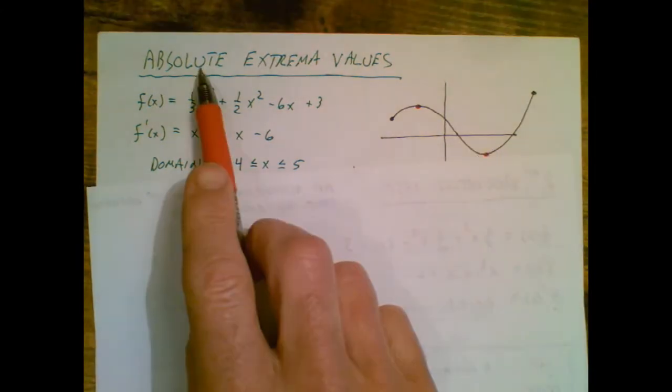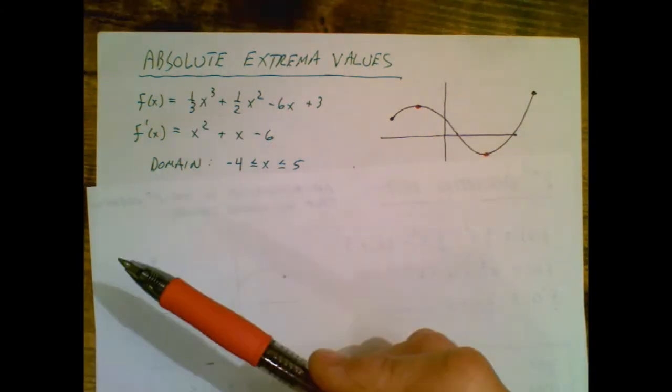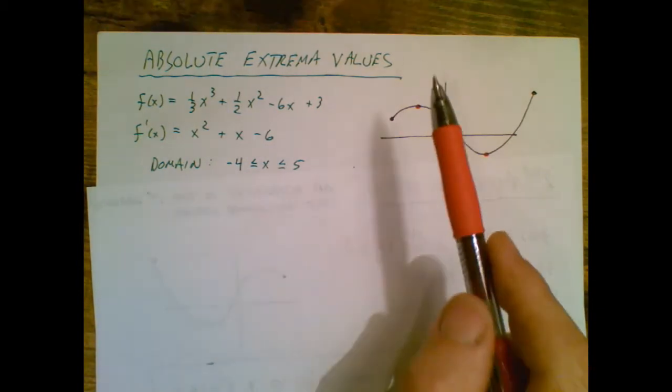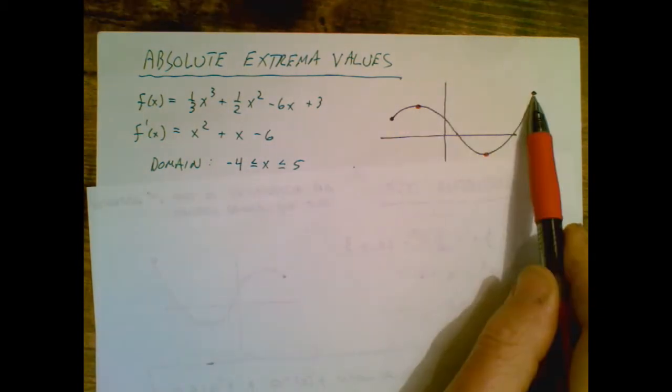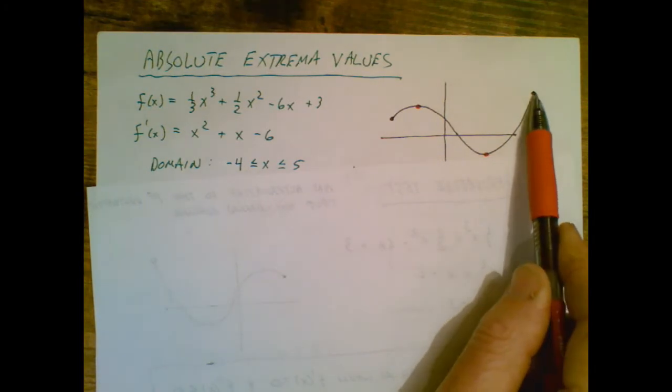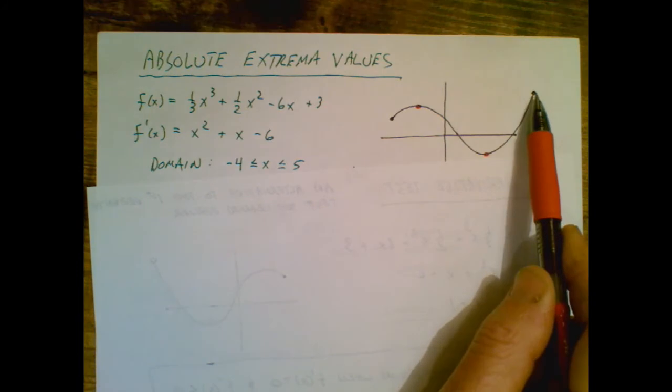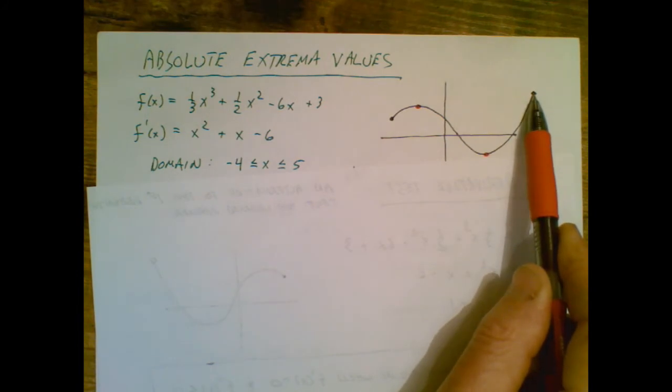So the absolute extrema are the dominant extrema. So between this maximum and this maximum, this one is the dominant one because it's the greater one. It's higher up there. So this is the absolute extrema, or the absolute maximum.